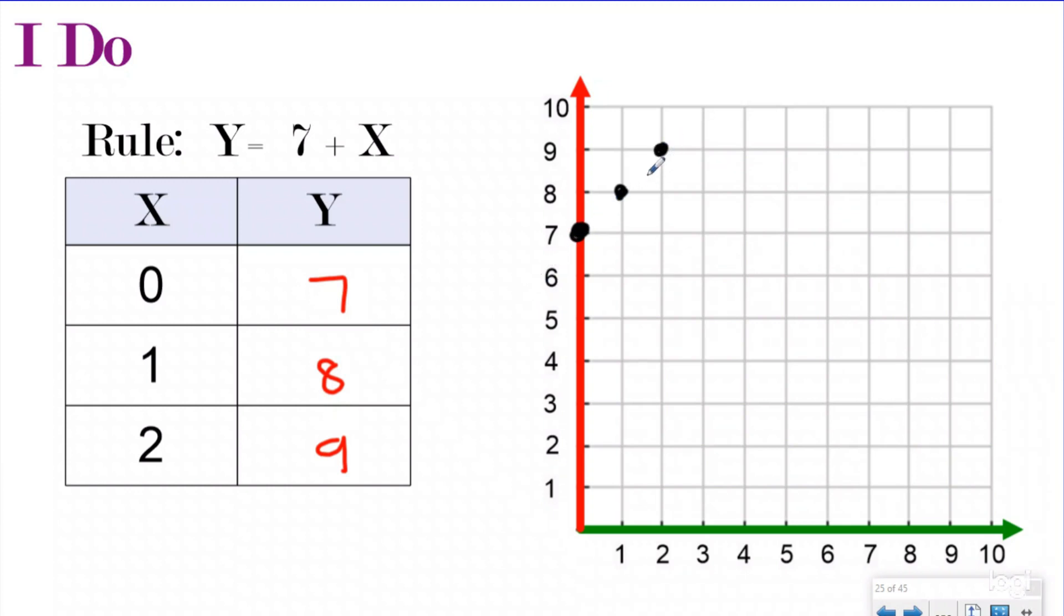And what you notice is, you don't have to, but if you did connect the dots, you notice that I formed a straight line. If you kept going with this rule, your next one would be, if your X was three, right, seven plus three would be 10. So our next one would be right here and it would just continue the line.